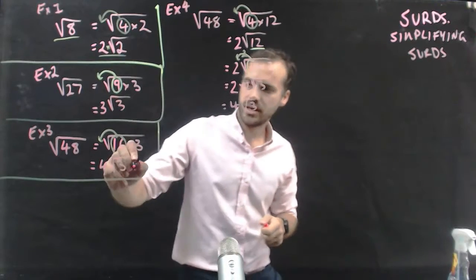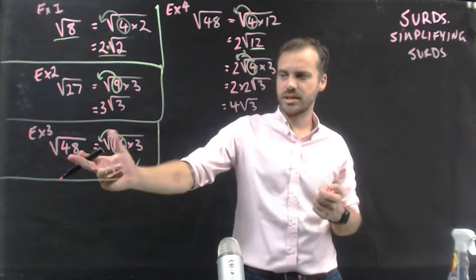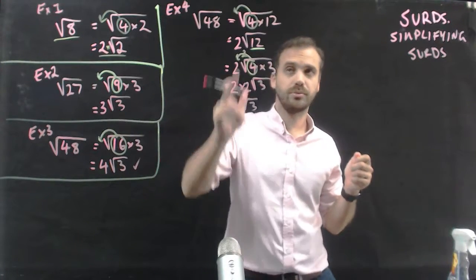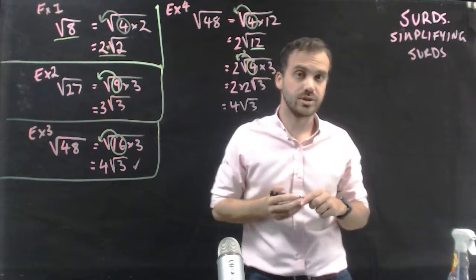So, you can see here, it was very straightforward, but most people, when they see 48, don't think 16 times 3. They'll probably think 4 times 12. So, in that case, you've got to do it in two stages.